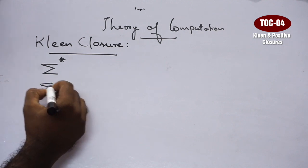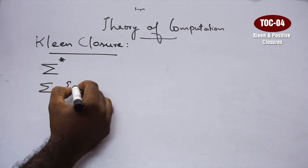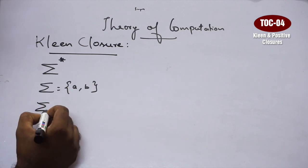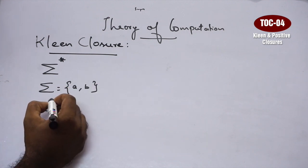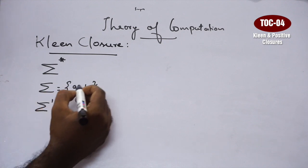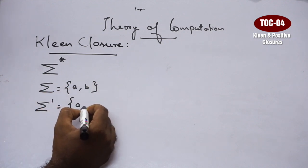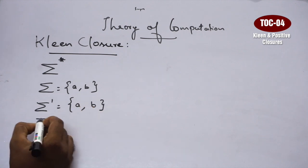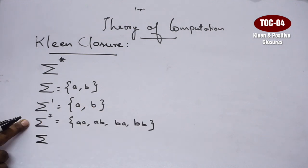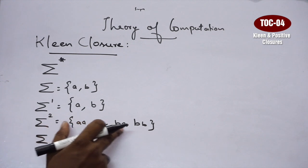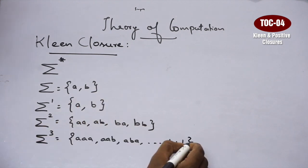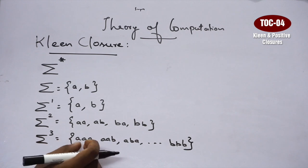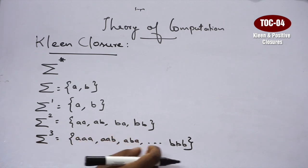This is the alphabet. I will use A and B. First, I will use the string of length 1: we will see A, B. Next, string of length 2: AA, AB, BA, BB. String of length 3: we will use all combinations.